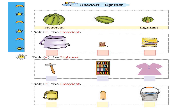Now we are going to complete this exercise: tick the heaviest. Here we have to compare a bucket, a bundle of thread, and a water tank. Accordingly we have to find out which is heaviest. The water tank seems to be the heaviest, so let me put a tick mark inside this box.